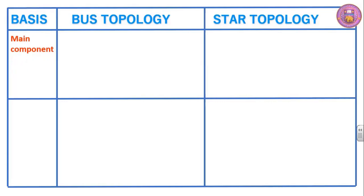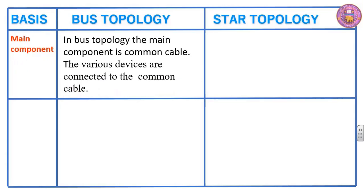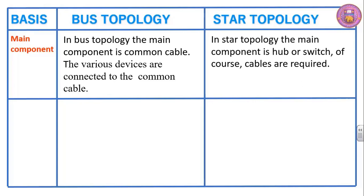Main component. In bus topology the main component is the common cable, to which the various devices are connected. In star topology the main component is the hub or switch — of course cables are required, but the main component is hub or switch.